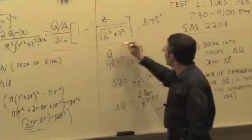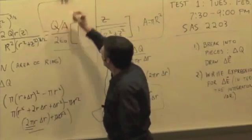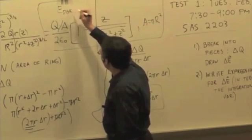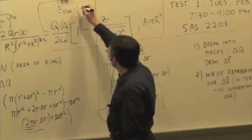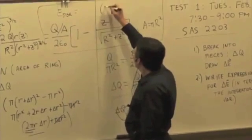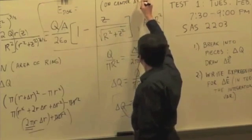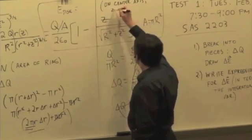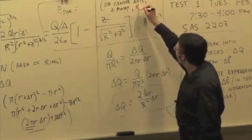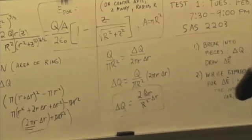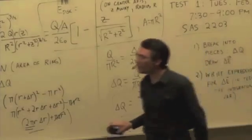This expression is the magnitude of the electric field of a uniformly charged disk, on the center axis, at distance Z away, for a disk of radius capital R. It's precise but a bit of a mess to plug things into, so let's see if we can make some approximations.